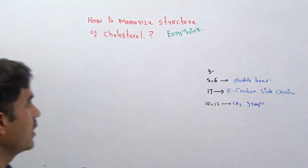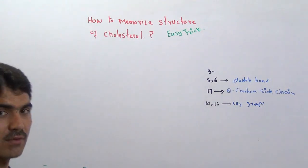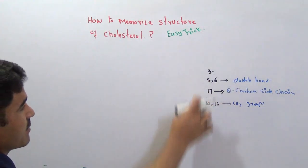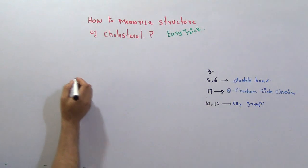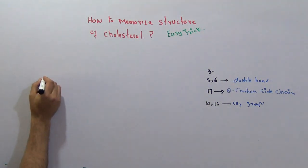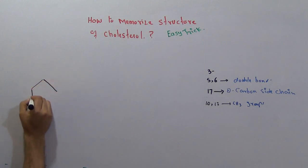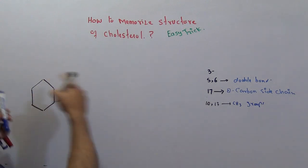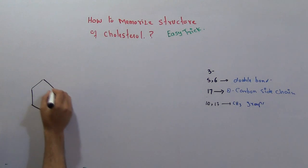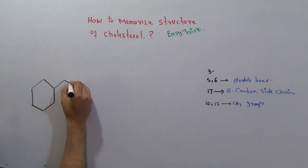If you want to write the structure of cholesterol, here are some numbers I have mentioned - don't worry about this. First of all, you need to write a six corner ring, the first one six corner ring like this. This is so easy, everyone can write it. Along with side you will write another six corner ring. This is again fine, everyone can do this.